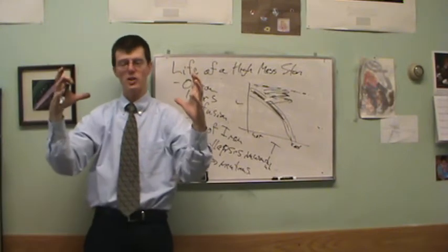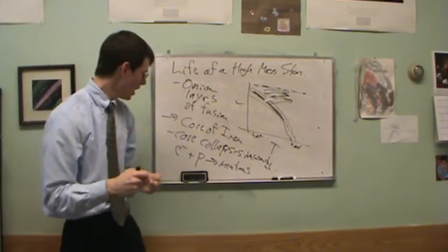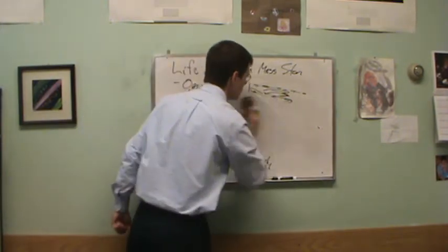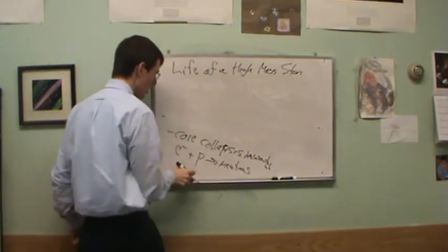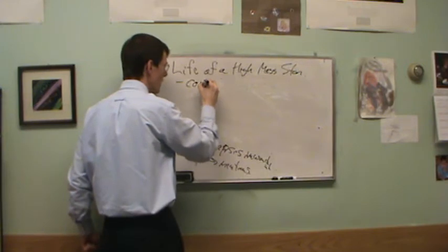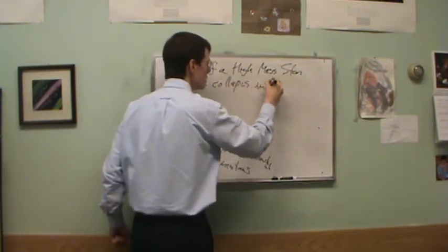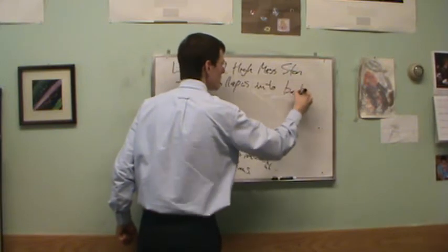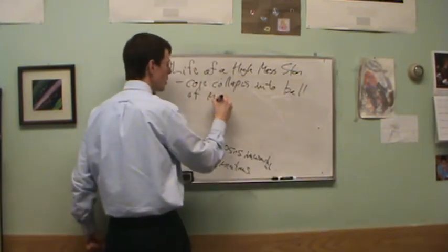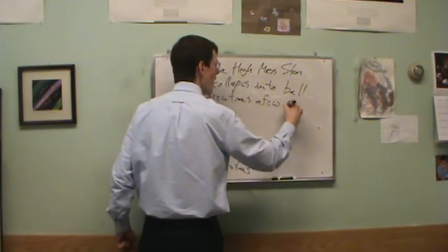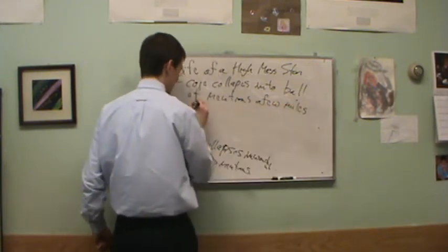So it goes from now being this big, giant object, collapses down to an object just a few miles across a solid ball of neutrons. So the core collapses into a solid ball of neutrons. Core collapses into ball of neutrons a few miles across, tiny across.